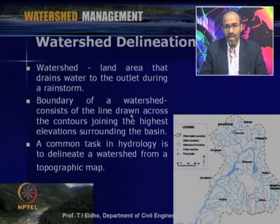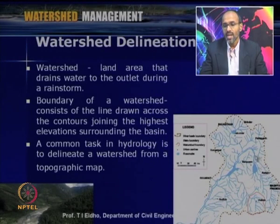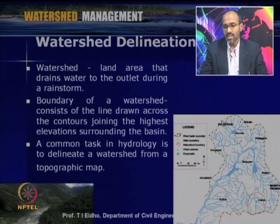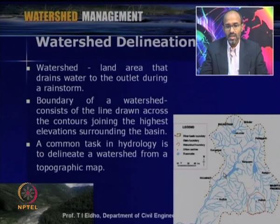The boundary of a watershed consists of a line drawn across the contours joining the highest elevations surrounding the basin. If this is a district, thaluk, or village, this is the boundary of the watershed which is delineated. For example, this is a sub-watershed of the main watershed — this is the delineated watershed and this is its boundary.